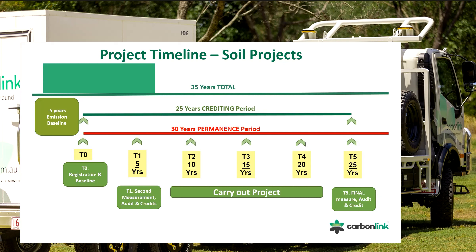Taking the five-year emissions baseline period plus the extra five years added at the end for permanence, you've essentially got a project running for 35 years, with a 25-year crediting period and 25-year permanence period. All of that stays the same except the permanence period goes to 100 years if you elect the 100-year option — and you receive more credits along the way.